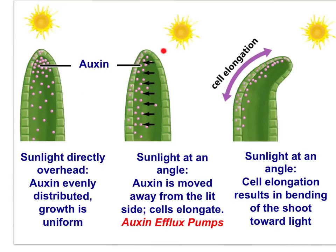But when the sunlight strikes the plant at an angle, auxin is actively moved away from the lit side, the cells on the shaded side elongate, and this cell elongation results in a bending of the shoot toward the light. Auxin is actively moved by auxin efflux pumps that actively transport the auxin, creating concentration gradients with auxin concentration being higher on the shaded side of the plant.